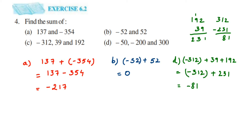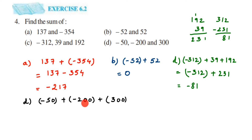The last question is: -50 + (-200) + 300. First, I'm going to solve the first two integers. You can start from anywhere and get the same answer. The first two have the same sign — same sign means add them. 50 + 200 = 250, and since both are negative, we put minus: -250.